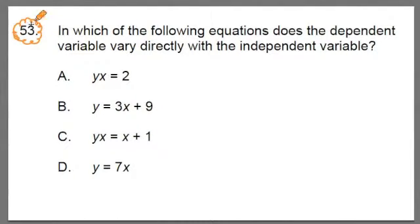It says here in number 53, in which one of the following equations does the dependent variable vary directly with the independent variable? And we have four different equations and we have these two variables, our y and our x. I want you to remember that our y is always our dependent and our x is our independent variable.